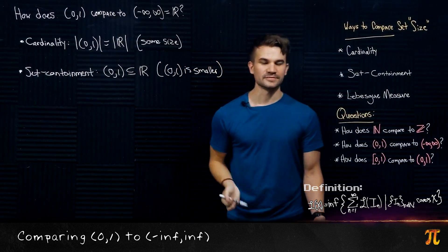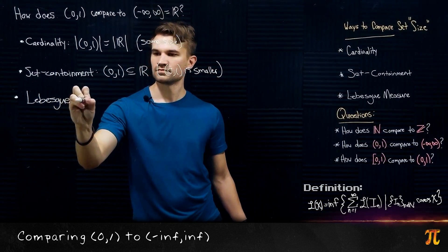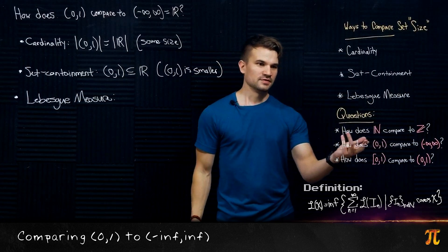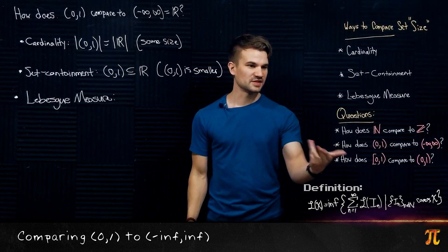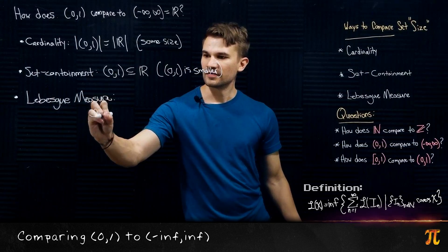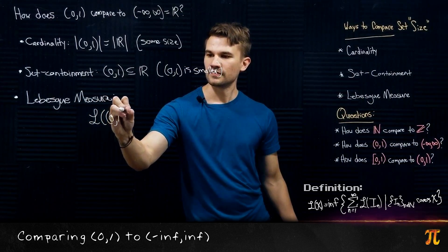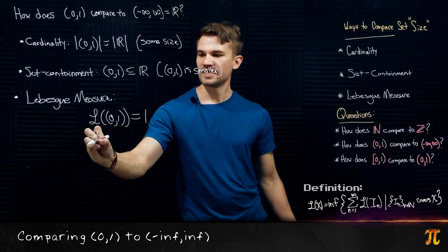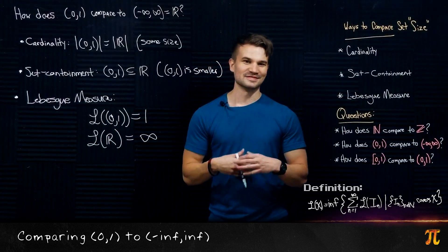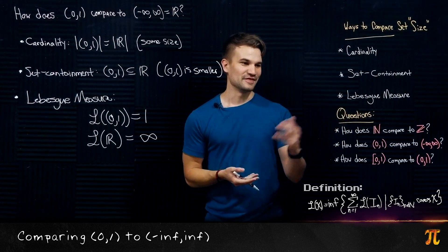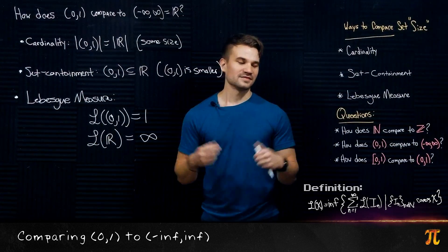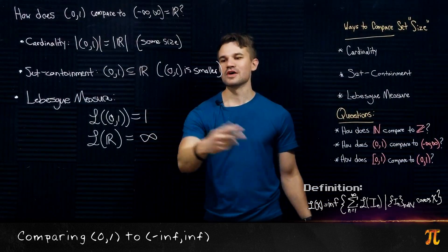And finally, Lebesgue measure. This is an easy case. The Lebesgue measure of the interval (0,1) — no need for covers because we know that for open intervals it's just the length — so the Lebesgue measure of (0,1) is 1, and the Lebesgue measure of the real numbers is infinite. You can justify that by saying infinity minus negative infinity is infinity plus infinity, which is infinity. It's just damn long, so we'll put infinite.